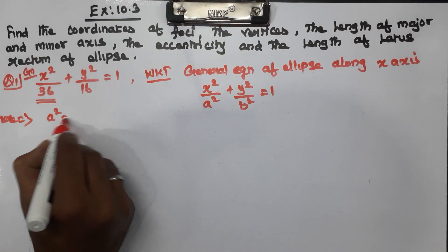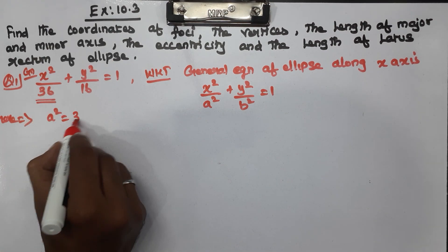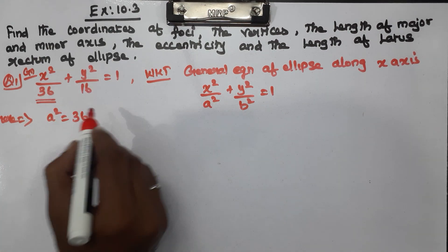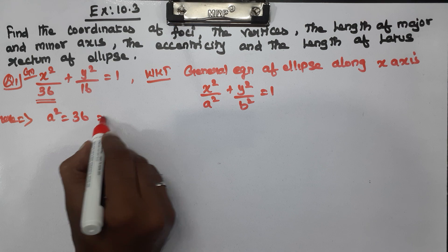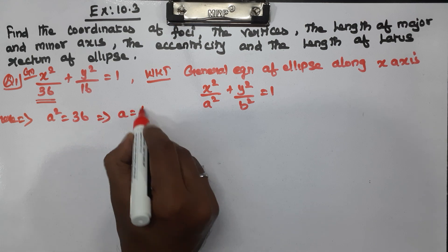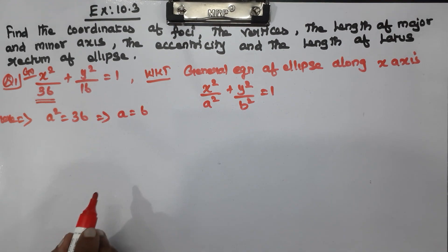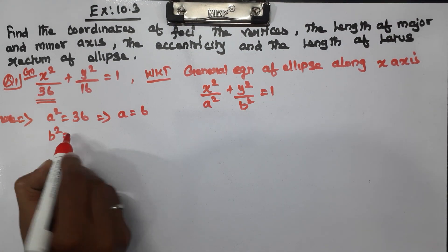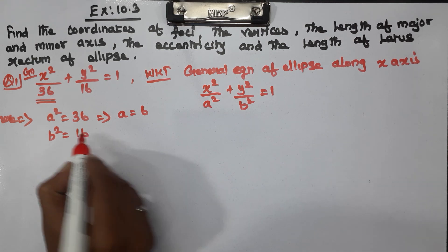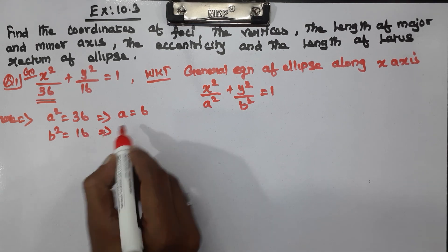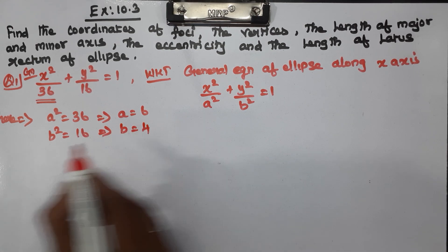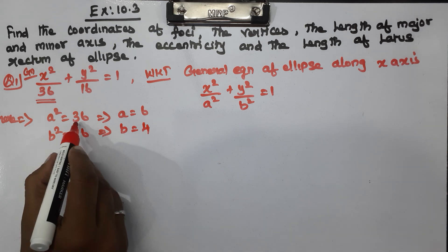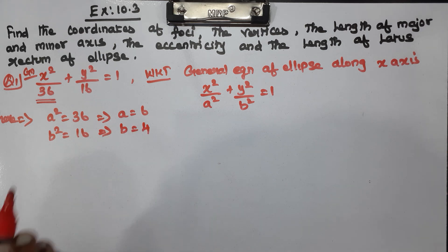Comparing, a² = 36, which implies a = 6. And b² = 16, so b = 4. Square root of 16 is 4 and square root of 36 is 6.